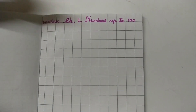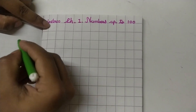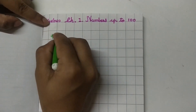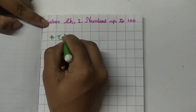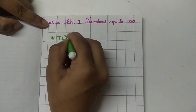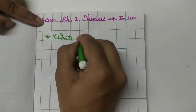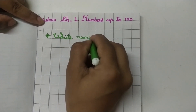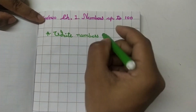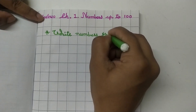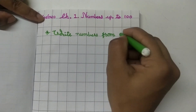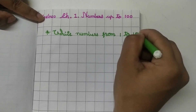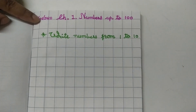Now leave this one line and make a star in margin. Write the heading: Write Numbers from 1 to 10. Now leave one line and make an arrow in margin. Write number 1 and make a box around it. Leave one box, then write 2 and make a box around it.